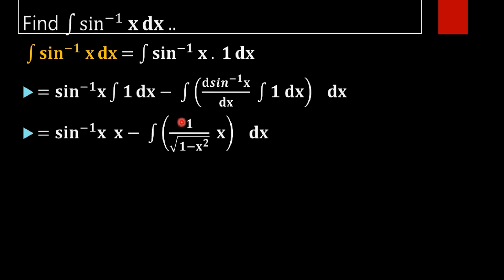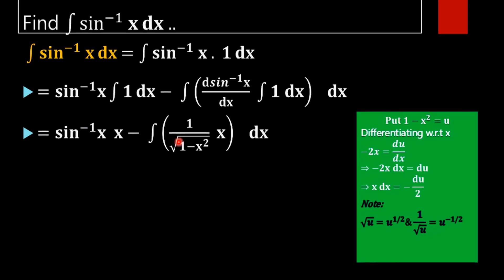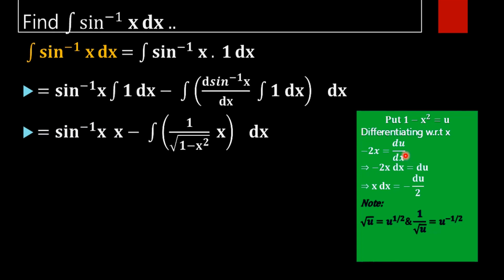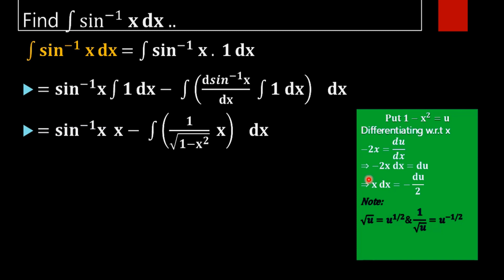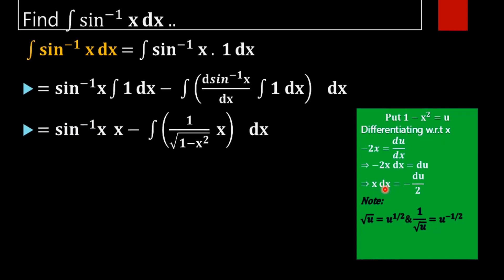Then we have to find the right side of this equation. We have 1 minus x square as the denominator. We will take 1 minus x square as u. On differentiating with respect to x, we will get minus 2x — that is, the derivative of 1 minus x square is minus 2x — equal to du by dx, which implies minus 2x dx equals du, and therefore x dx equals minus du by 2.